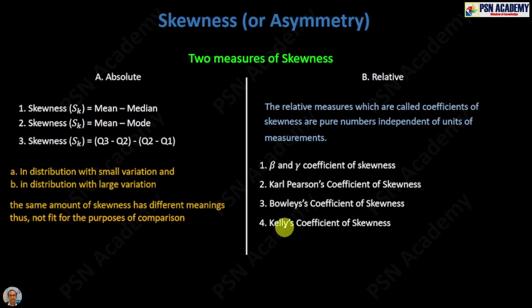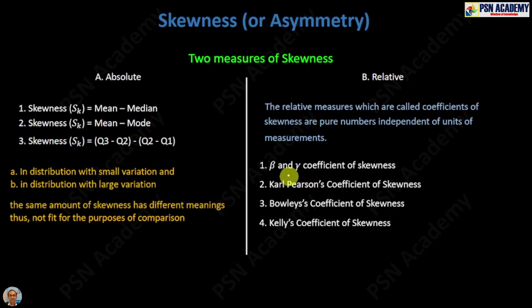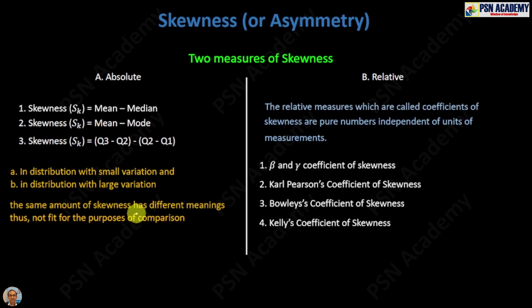In this video we will learn about the third relative measure of skewness in our list — Bowley's coefficient of skewness. In the last two videos we discussed the first and second ones: the beta and gamma coefficient of skewness, and Karl Pearson's coefficient of skewness. We also learned why we study relative measures of skewness, because absolute measures are not capable enough to differentiate between the same amounts of skewness. So let's proceed with Bowley's coefficient of skewness.